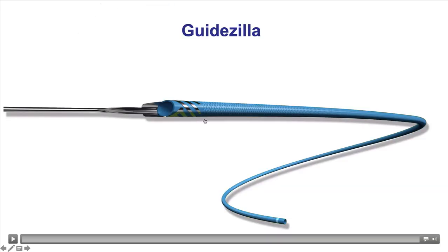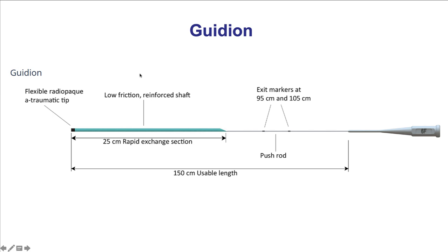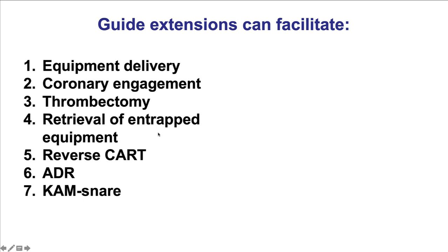The Godzilla, very similar, has a distal cylinder and a proximal pushrod, and then the Telescope, very similar as well with the other two catheters. Here is the image of the Guideliner. All of the catheters, with the exception of the Trapliner that has a shorter cylinder, have a 25-centimeter long cylinder that can be used to deeply intubate the target vessel.